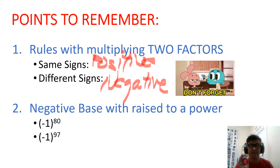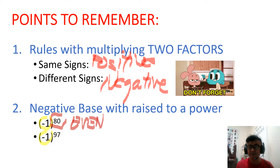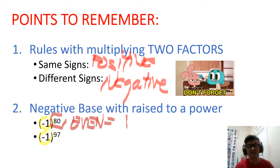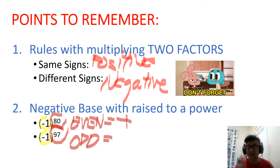Now, when we multiply and have exponents, take note: this only works if the base is negative. Look at the exponent — if the exponent is even, the negatives pair up, so even though they're negative, they pair up and it becomes positive. If the exponent is odd, like 97, the negatives pair up but there will be one single negative left over, so different signs means the answer will be negative.